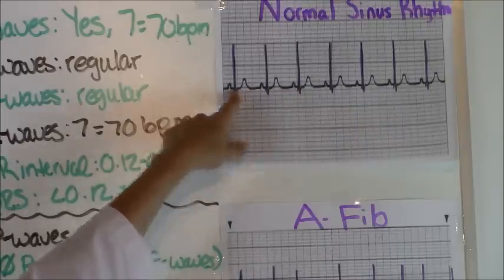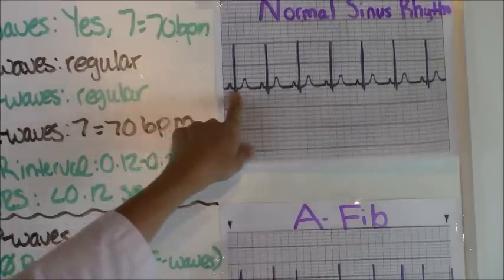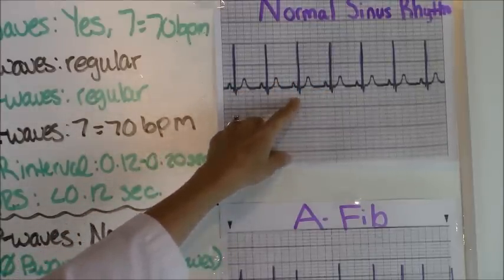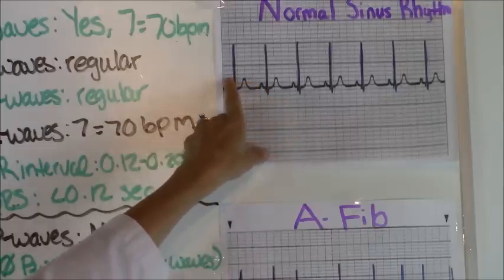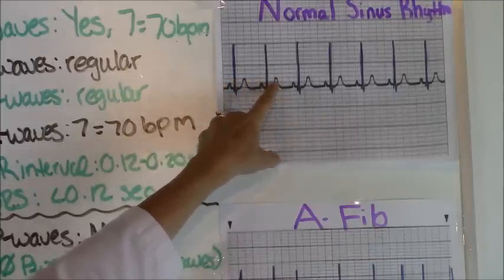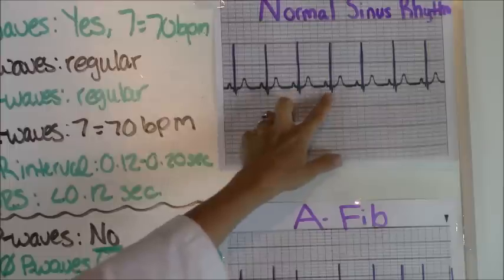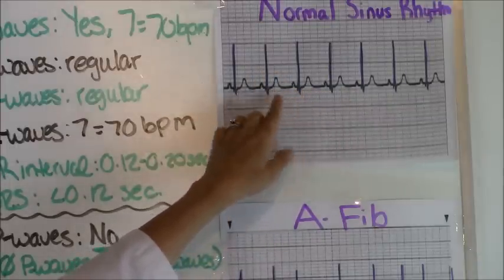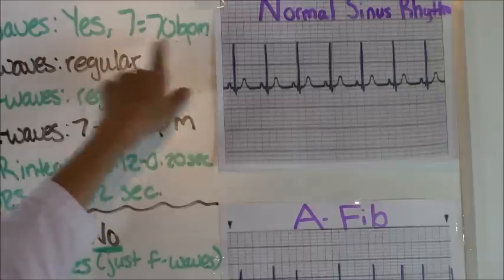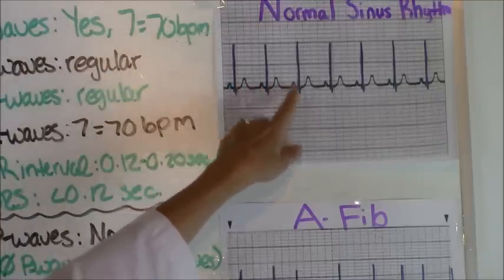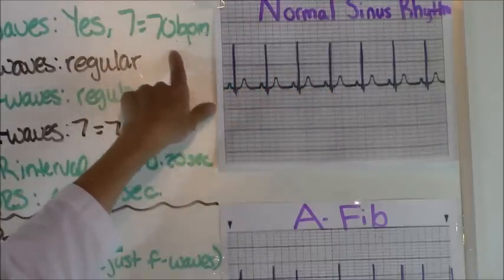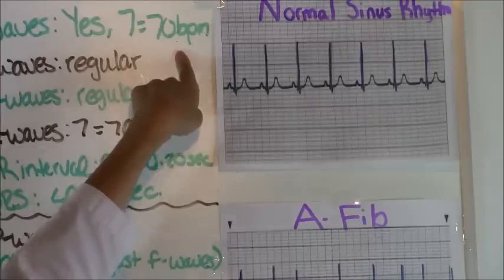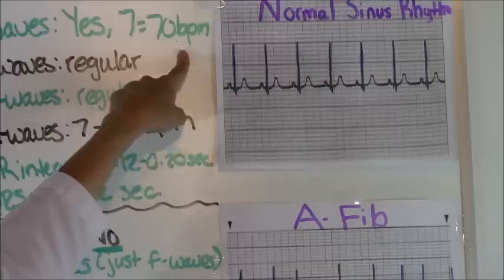Next, we count how many P waves are present within six seconds. You want to count 30 small squares, and however many P waves fall within that interval is your atrial rate. Here we got seven P waves, and seven times 10 gives us 70 beats per minute. So our atrial rate is 70 beats per minute. Remember, a normal rate is 60 to 100.